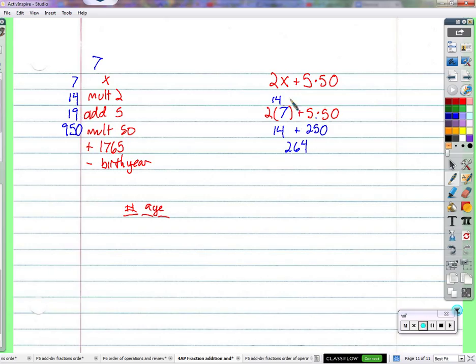But what I wind up doing here, if I follow the order of operations, is 50 only times 5. And then I just add on the 14 after that. Right? I'm supposed to add the 14 and the 5 first. I'm supposed to add the 14 and the 5 and get 19 and do 19 times 50.